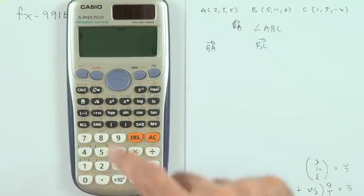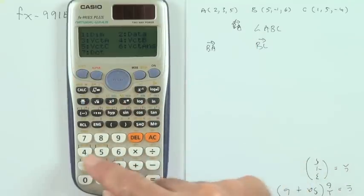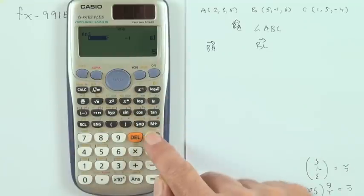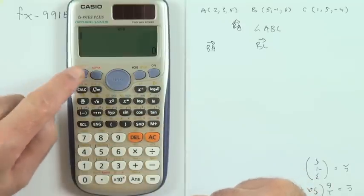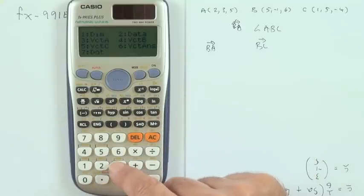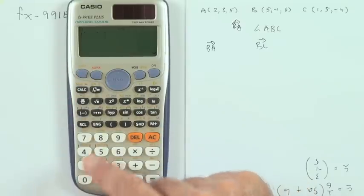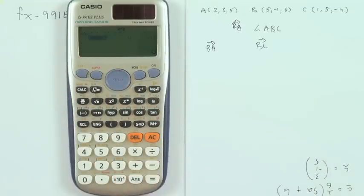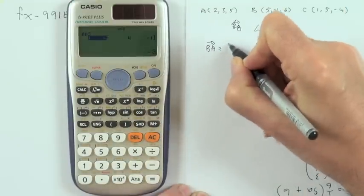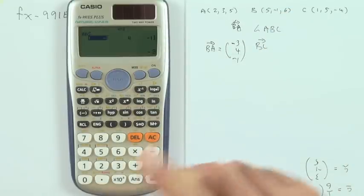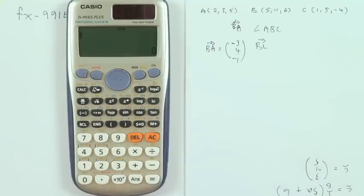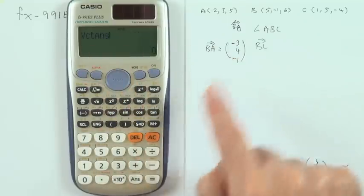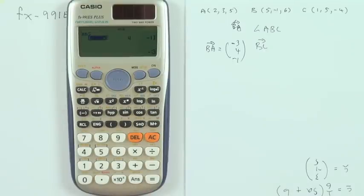If I want to call any of them up, I just need to go into that menu. Shift 5, if I want vector B, 4. Pull it out, there it is: 5, negative 1, 6. Now if I want BA, that's going to be A minus B. I can go into the menu, pull out vector A, that was number 3. Subtract, go into the vectors, pull out vector B, that was number 4. Press equals and that would be the result. The result is negative 3, 4, negative 1.